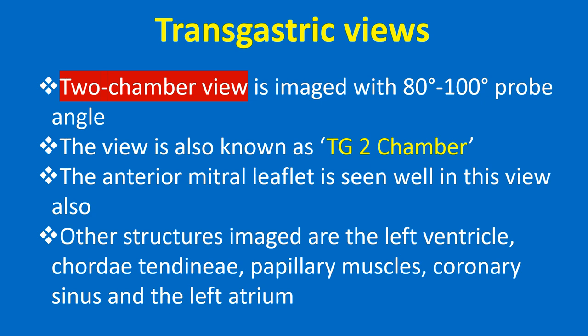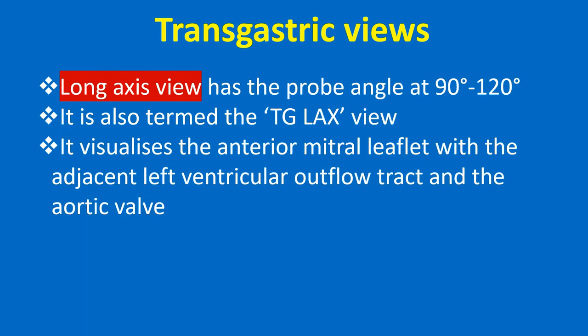The two-chamber view is imaged with 80-100 degrees probe angle, also known as TG two-chamber. The anterior mitral leaflet is seen well in this view. Other structures imaged are the left ventricle, chordae tendineae, papillary muscle, coronary sinus, and the left atrium.